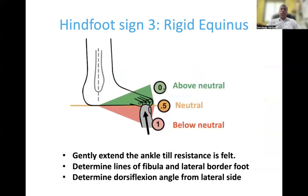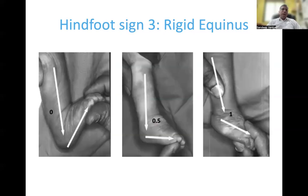The last hindfoot sign is the rigid equinus sign, assessed by everting the forefoot and dorsiflexing the ankle passively, then assessing the angle between the fibula and the lateral border of the foot — this sign should be assessed from the lateral aspect. If on passive dorsiflexion you can bring the ankle above neutral, that scores 0. If you can reach neutral but not beyond, it scores 0.5. If you cannot dorsiflex to neutral, that scores 1. These examples illustrate the three grades of the rigid equinus sign.